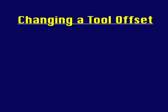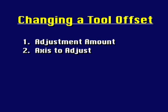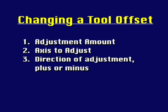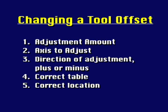Before changing a tool wear offset, five things must be known. First, the correct adjustment amount. Second, the axis to which the adjustment is to be applied. Third, the direction of the adjustment, either plus or minus. Fourth, which offset table is being used. And fifth, which location in that table.